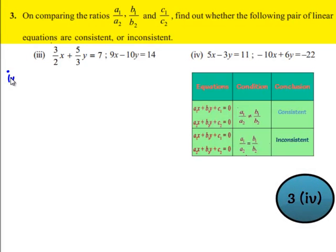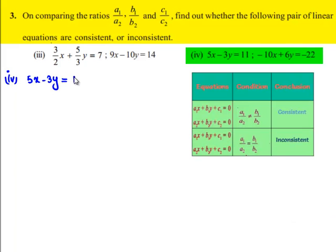Now, coming to the fourth part, the given set of linear equations are 5x minus 3y is equal to 11 and minus 10x plus 6y is equal to minus 22.